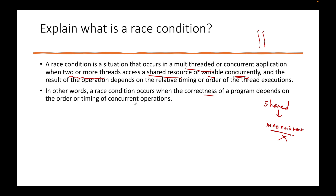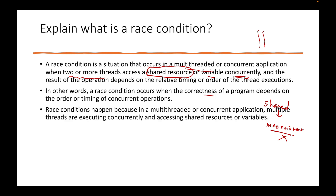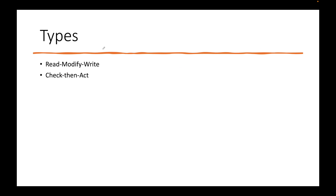The race condition occurs when the correctness of the program is compromised. Why is it compromised? Because multiple threads are trying to manipulate a shared resource — let's say a variable, it can be a bank account balance or anything. That shared resource is being manipulated by multiple threads at the same time, leading to a data race. The outcome is you are getting wrong results which you shouldn't be getting.